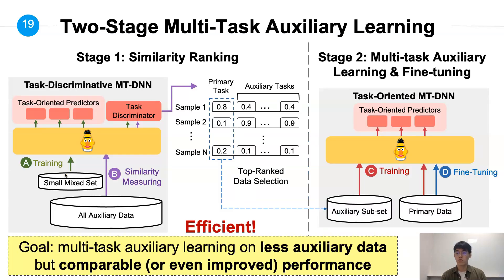Here is the overview of the two-stage multitask auxiliary learning pipeline. In the first stage, we use feature similarity to select the most useful auxiliary data, and further use them in the second stage to perform multitask auxiliary learning.